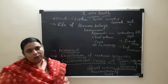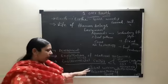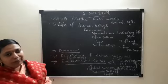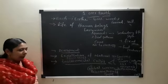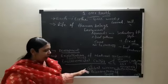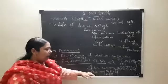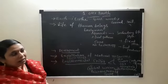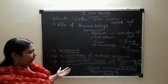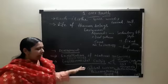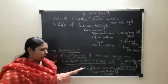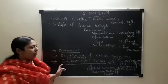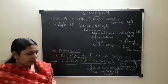Throughout the world and throughout India, global warming is occurring — average temperatures are completely increasing. We are releasing all poisonous gases into the air and water. This is called the environmental crisis: global warming, releasing poisonous gases — everything together is called the environmental crisis.